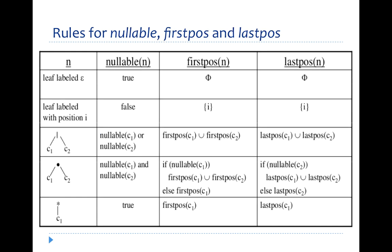The rules for constructing first position and last position are listed here. In a syntax tree there are five types of nodes: concatenation, OR, closure (star), and leaf nodes labeled either with null or with position i. A leaf node labeled with null is nullable, and the closure node is always nullable. A concatenation node is nullable if both c1 and c2 are nullable; an OR node is nullable if c1 or c2 is nullable.